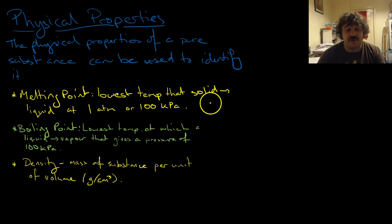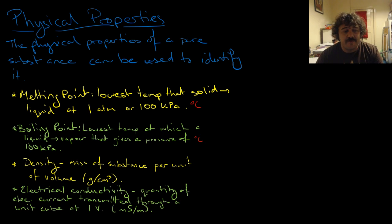By the way, these are all measured in degrees Celsius or centigrade if you're so inclined. And then we have the electrical conductivity. This is how much electrical current will be transmitted through a unit cube at one volt.